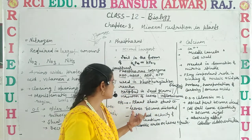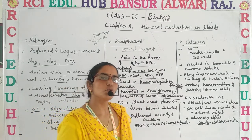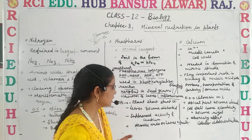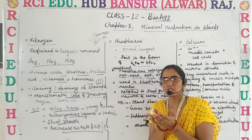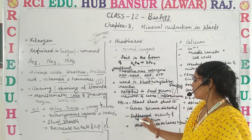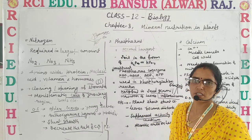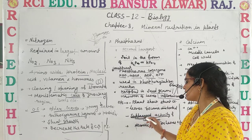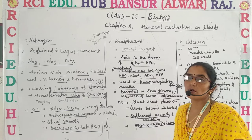Regarding the deficiency symptoms of phosphorus: first, plants show stunted growth. Leaves become distorted — their shape changes. It also suppresses the activity of the cambium, meaning the continuous division and growth activity of cambium decreases. Necrotic areas — brown, spot-like structures — appear on the leaves and fruits.